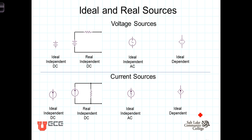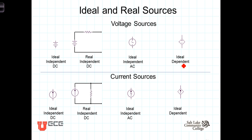First of all, we'll distinguish between voltage sources and current sources, and then we'll also make a distinction between ideal sources and real sources. We'll distinguish between constant or DC sources and time-varying sources, which we refer to as AC sources. And then we'll also make a distinction between independent sources and dependent sources.